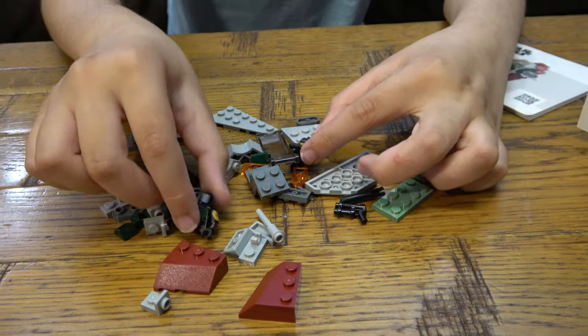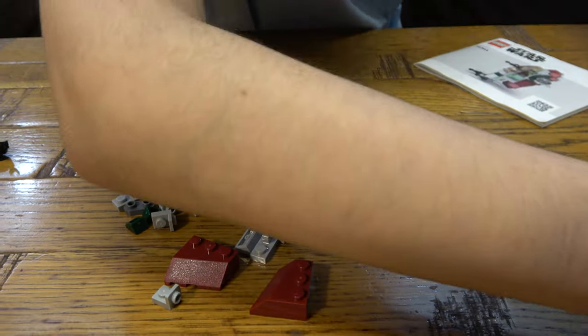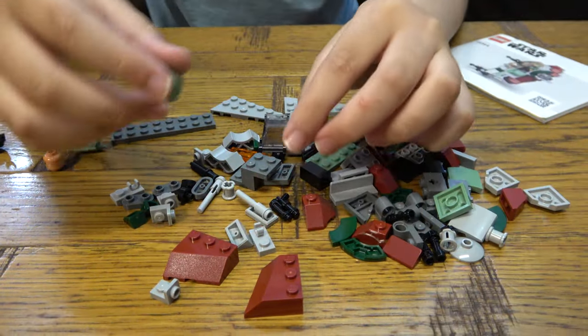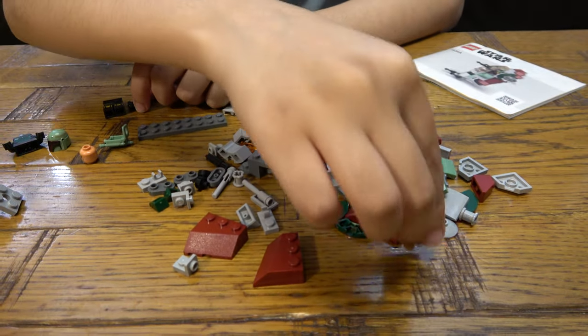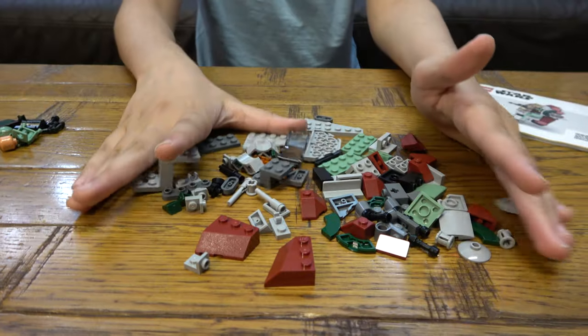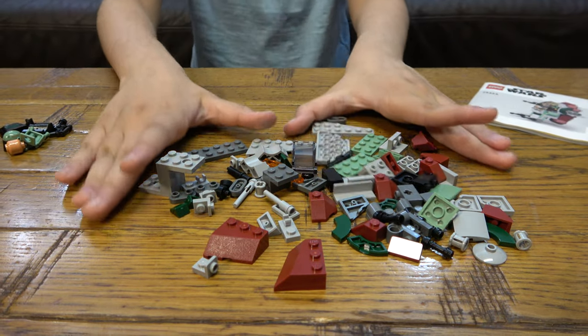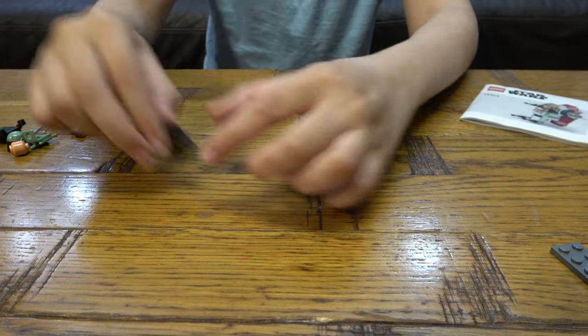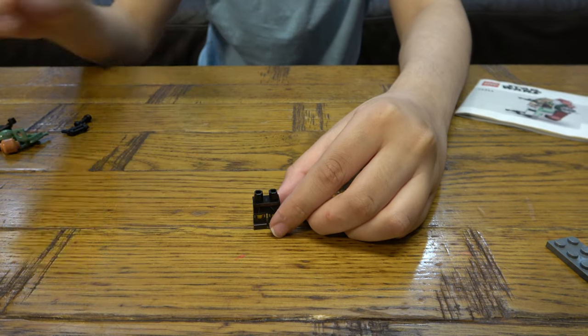Let's build the Boba Fett minifigure. Let's just take everything that's Boba Fett's. So these are all the pieces combined. And let's get Boba Fett minifigure.